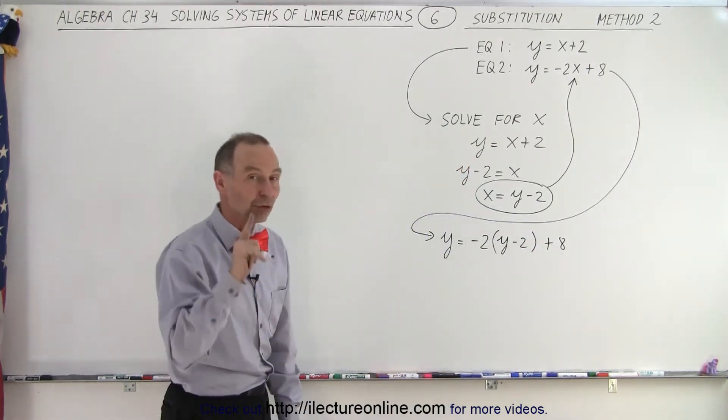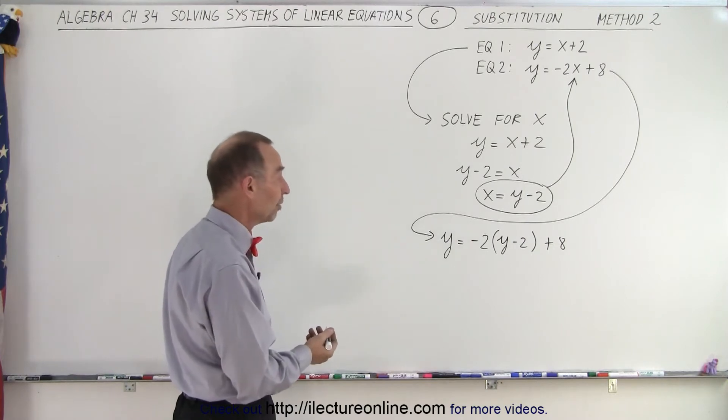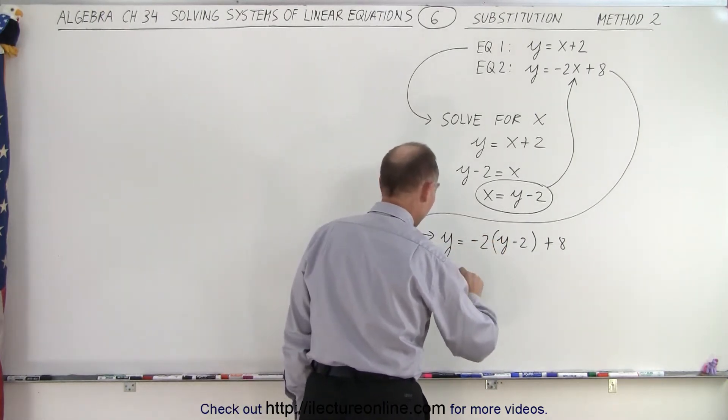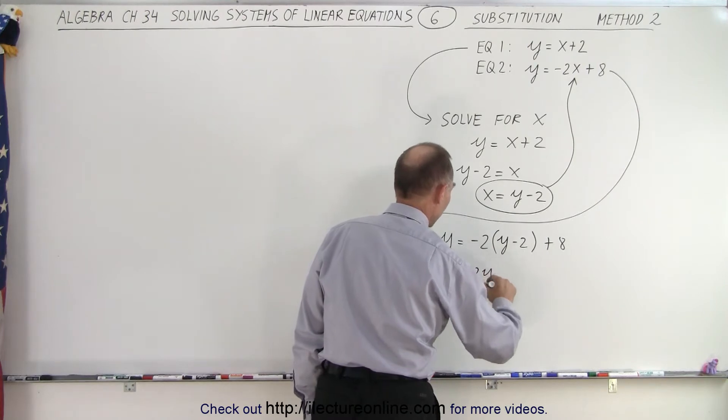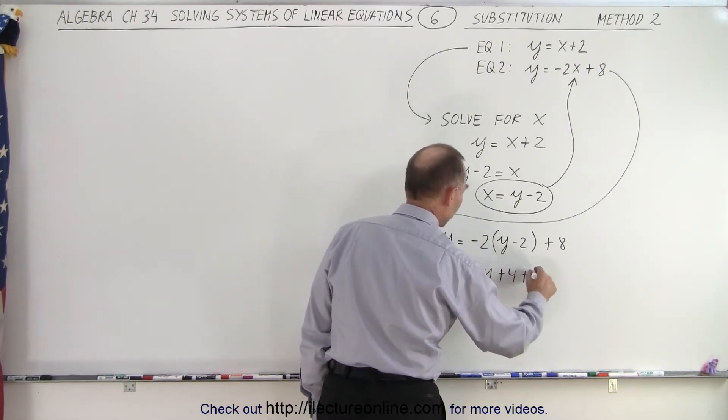now we have an equation with just one variable, which we know how to solve. First we get rid of the parentheses, we get y is equal to minus 2y plus 4 plus 8.